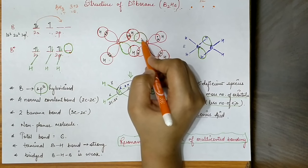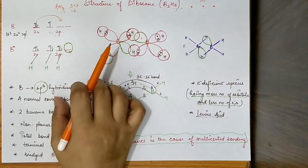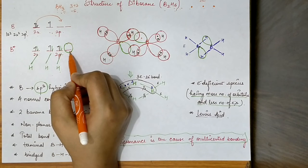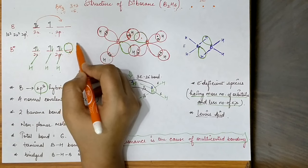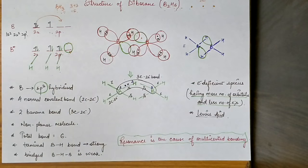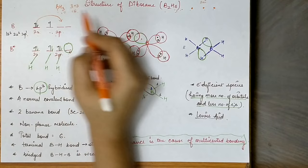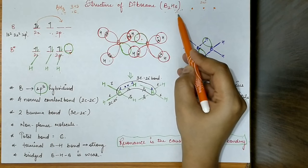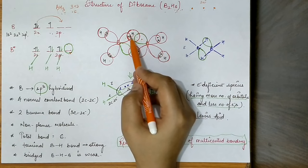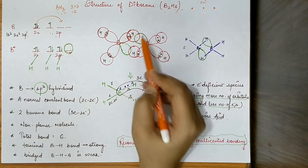The electrons delocalize into the unhybridized P orbital, making the structure more stable. This is why BH3, which was very unstable, converts to B2H6, which is more stable — because of this delocalization of the electron pair from the B–H bond into the unhybridized vacant P orbital.